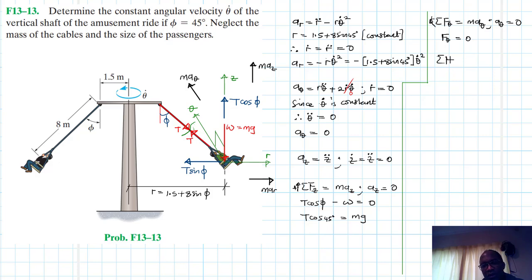So, then we have summation of forces in the arrow, going in this direction, being our reference. And this is equal to M A arrow. And what we have in this direction, we do have minus T sin phi is equal to M A arrow.